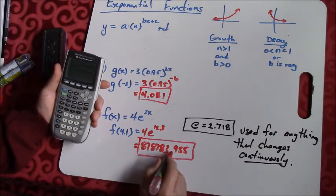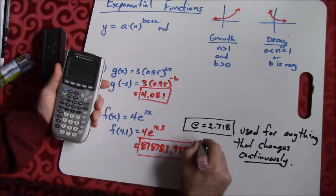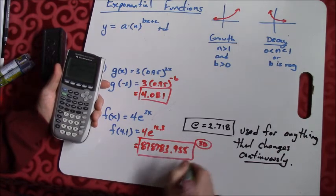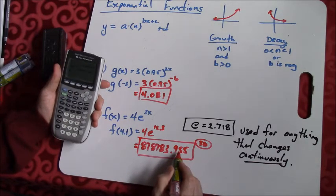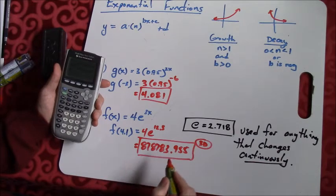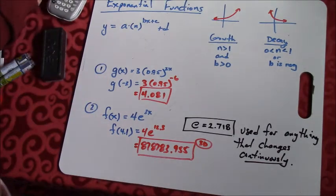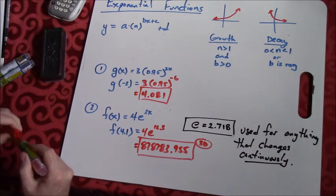Remember, when we round, always round to three digits. A lot of people saw this on the test. 3D means we're just rounding to three decimal places. Always, always, always. That rule's not going to change for us.